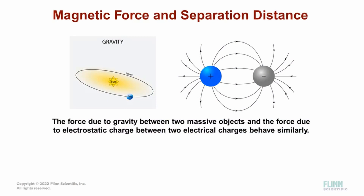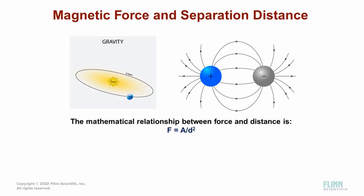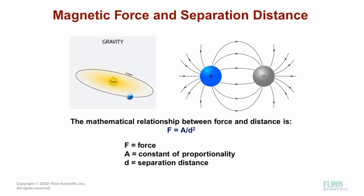The force due to gravity between two massive objects and the force due to electrostatic charge between two electrical charges behave similarly. In both cases, when the distance between the two objects changes, the change in magnitude of the force is inversely proportional to the distance between them. The mathematical relationship between the magnitude of the force and separation distance can be written as F equals A over d squared, where F equals force, A equals constant of proportionality, and D equals separation distance.